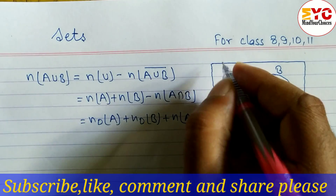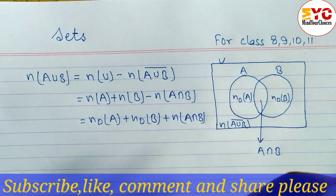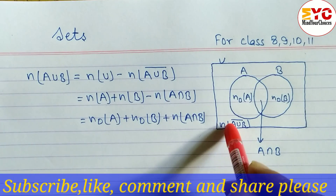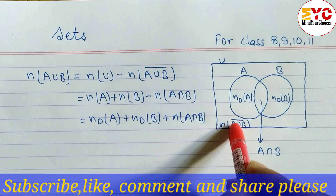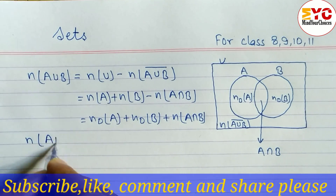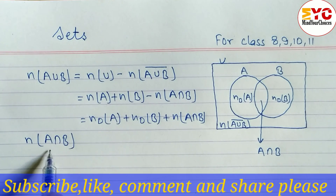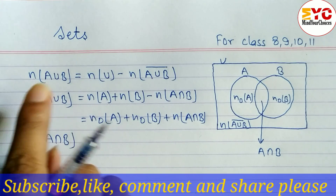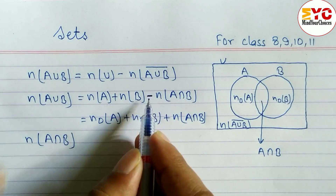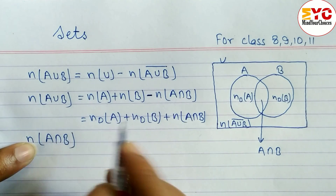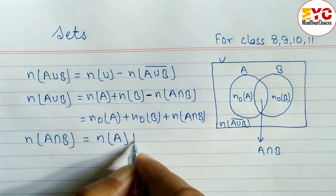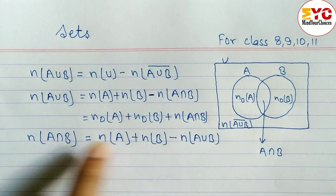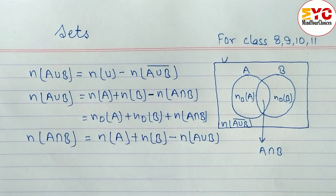Note the difference: when you have 'only A' you add, but when you have full n(A) you subtract the intersection. For the first formula: n(U) means the total universal set. From the total, when you subtract A∪B complement (the outside part), you get n(A∪B). To find n(A∩B) from the second formula, rearrange: n(A∩B) = n(A) + n(B) minus n(A∪B). If one side has intersection, the other has union — just interchange them.